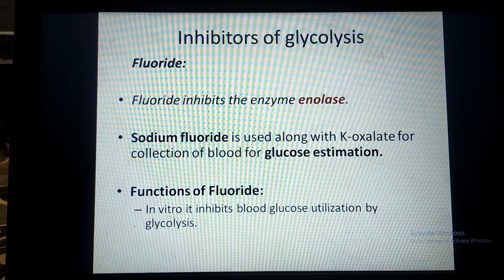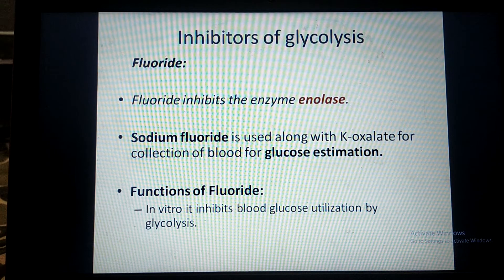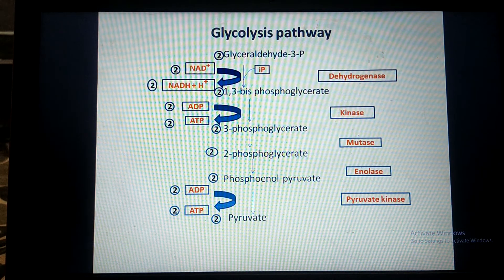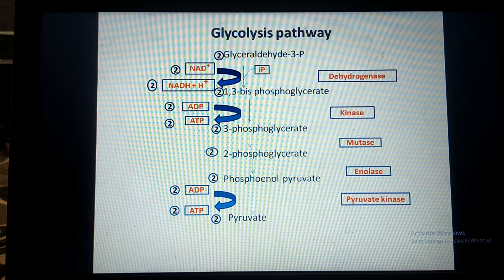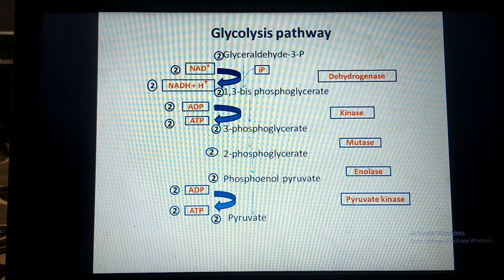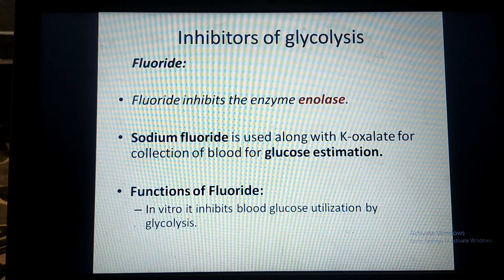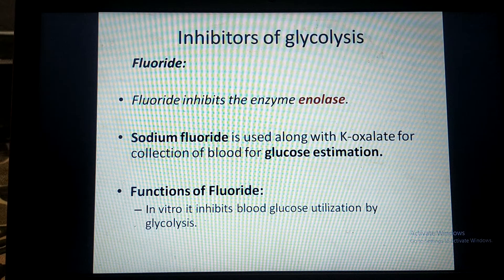The second poison is Fluoride. Fluoride inhibits the enzyme Enolase. Enolase converts 2-phosphoglycerate into phosphoenolpyruvate. Fluoride binds with Enolase and inhibits the enzyme.